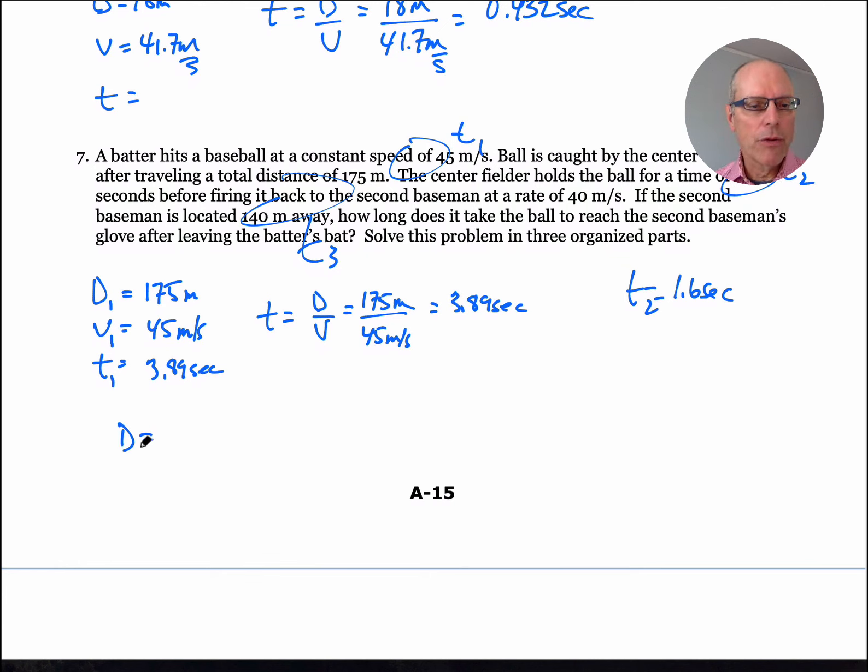Throwing the ball back in, the center fielder throws at a speed of 40 meters per second. The second baseman is 140 meters away, that's a big ballpark by the way. We're looking for the T3. Same as we did before, 140 meters over 40 meters per second comes up with 3.5 seconds. So all you do to get the total time is just add them all together. Total time is 8.99 seconds.